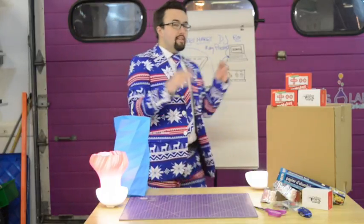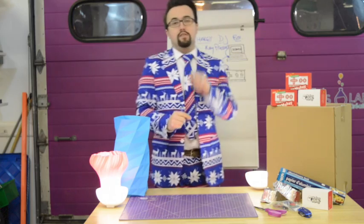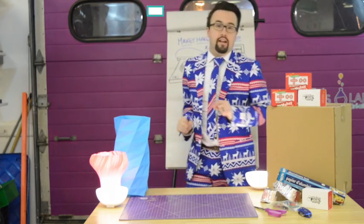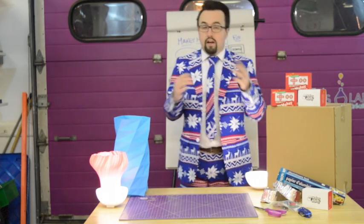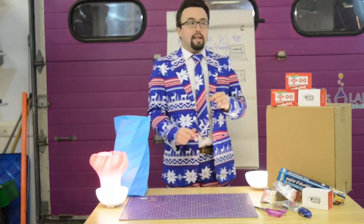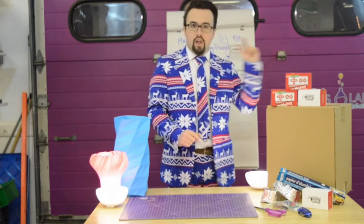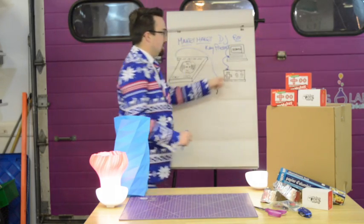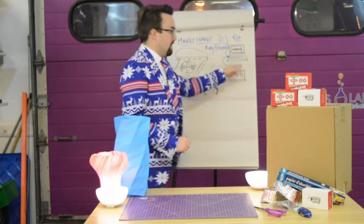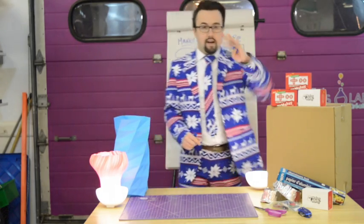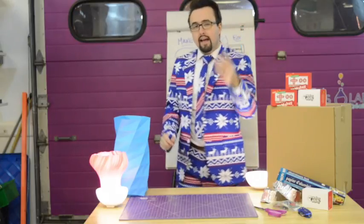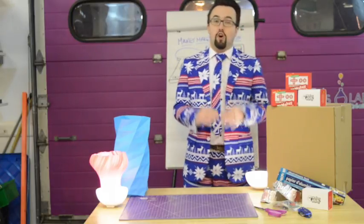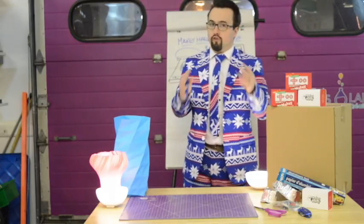If you know anything about a Makey Makey, it requires both a positive and a negative connection. In other words, we need something hooked up to a live key — like the arrow keys, the space key, the clicker, or any number of the keys available on back — and then the negative, which in this case we're going to call earth or ground.